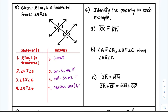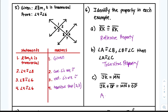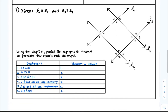Number six is about identifying which property is which. A is reflexive — the reflexive property is when something is congruent or equal to itself. B: if angle A is congruent to angle B and angle B is congruent to angle C, then angle A is congruent to angle C — that's the transitive property. C: you're adding segment OP to both sides, so this is the addition property.